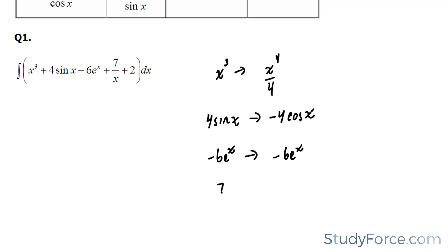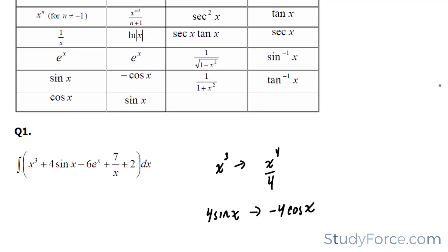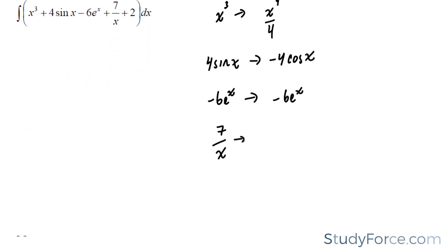And 7 over x, this is a tricky one. If you look at your table, you have 1 over x is ln x. So what you're going to need to do is separate this, 7 and 1 over x, and then that becomes 7 times ln absolute of x.